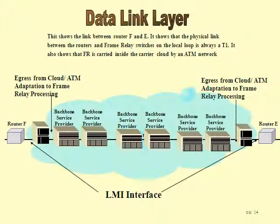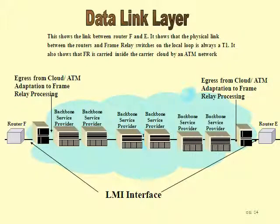Back to frame relay — frame relay links are a little bit different. The physical layer in frame relay is a T1 going from router F to the frame relay switch on the left-hand side, or from the frame relay switch on the right-hand side to router E. But between the two frame relay switches, frame relay frames are carried inside of asynchronous transfer mode cells. All of the nodes inside the carrier network or cloud are ATM nodes. Between those ATM nodes the physical layer is synchronous optical network, not T1s. This basically has two links the full length from F to E, but inside the carrier network there is a link layer protocol called asynchronous transfer mode.